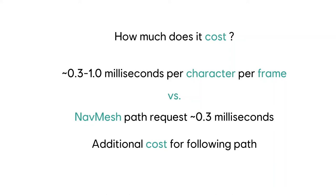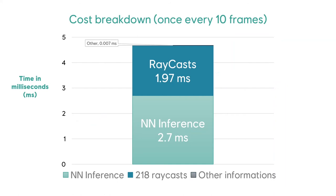The actual breakdown of performance costs: computing the raycasts comes in at about 2 milliseconds, and neural network inference comes in at about 2.7 milliseconds. Critically, this does not have to be done every frame because the world around you isn't changing every frame, and players aren't reacting on a frame-by-frame basis. In our case — a fairly static world — we were only evaluating this every 10 frames, and you can go further than that, so the cost gets amortized over that time frame.